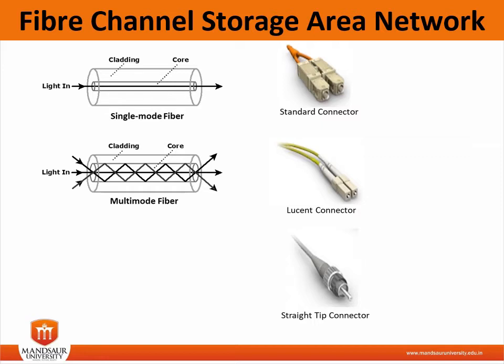Multimode fibers are classified as OM1, OM2, and OM3 based on their bandwidth. In multimode fiber, multiple light beams travel inside the cable and tend to disperse and collide. These collisions weaken the signal strength after it travels a certain distance.